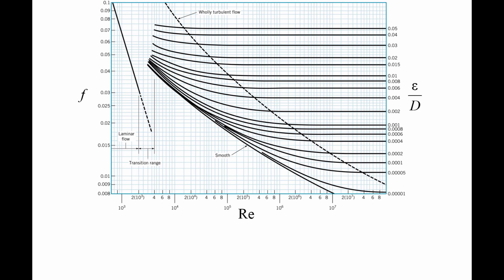The Moody chart shows the value of the friction factor as a function of Reynolds number for various values of the relative roughness. Notice that the x and y axes both use a log scale.